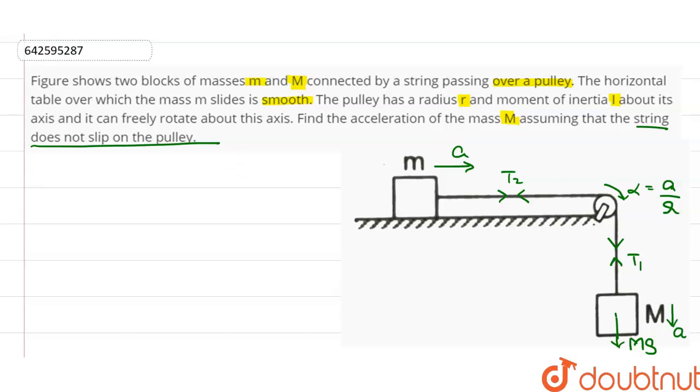So for mass m, if we write Newton's second law, we get T2 is equal to m into A. For mass M we get Mg minus T1 is equal to MA.